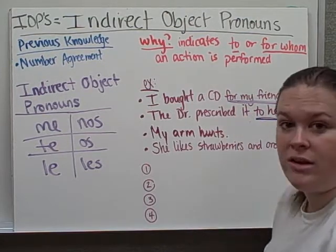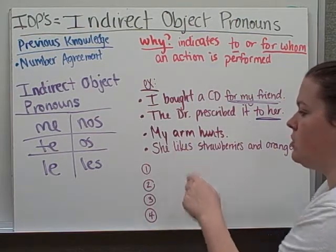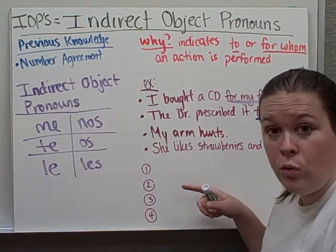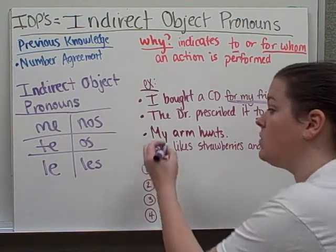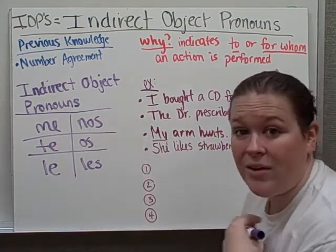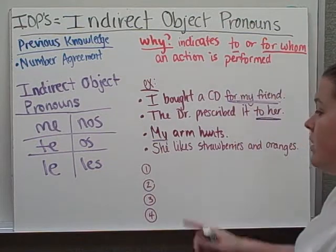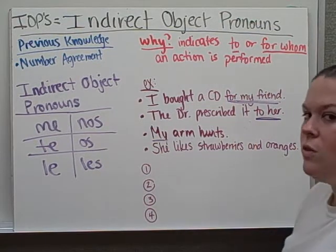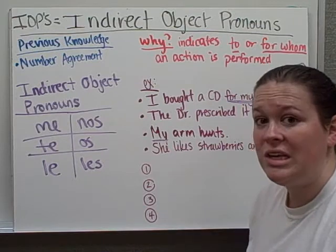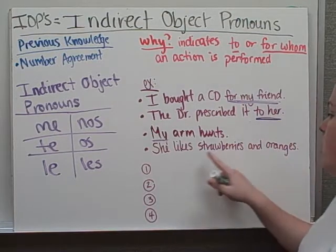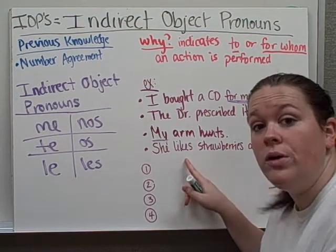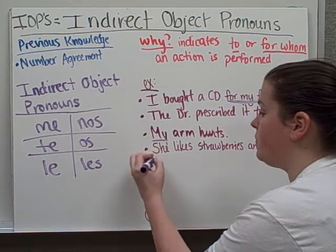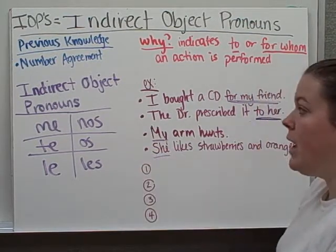That's our indirect object. My arm hurts — the arm hurts who? It hurts me. She likes strawberries and oranges. Like is gustar, remember, this means 'to please.' So the strawberries and oranges are pleasing to whom? They are pleasing to her.